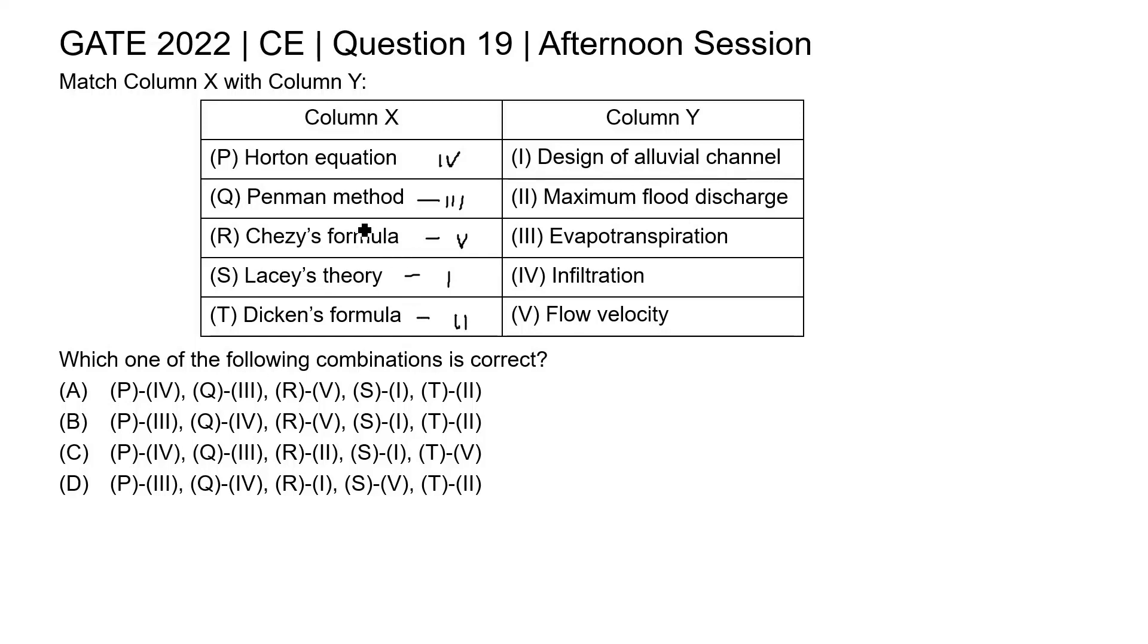Now coming to the options, for P this is 4, Q is 3, R is 5, S is 1, and T is 2. All the combinations are given in option A, which is correct. We must say option A is the correct answer for this question. Thank you.